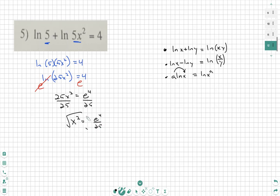We will now square root. We'll see that x is equal to plus minus e squared over 5. So I have a positive e squared over 5 and a negative e squared over 5.